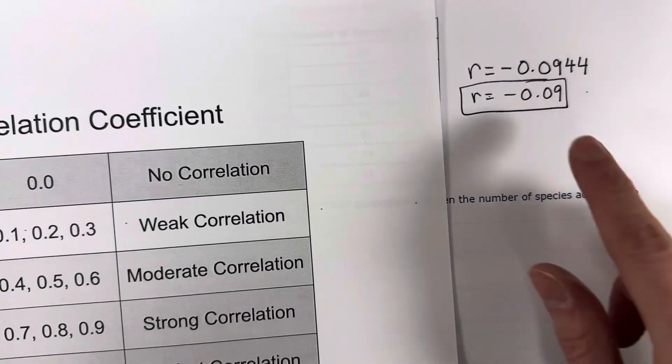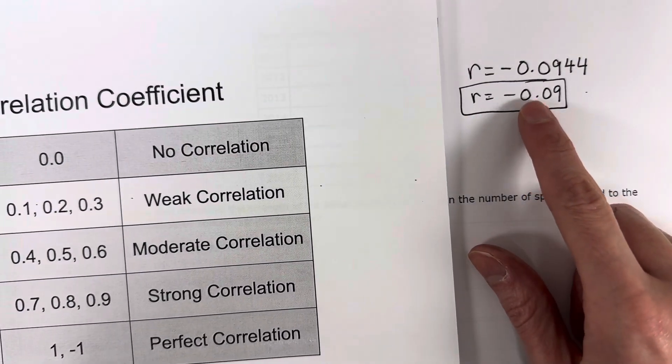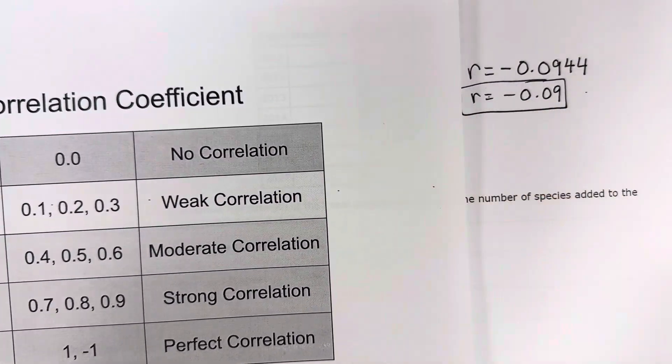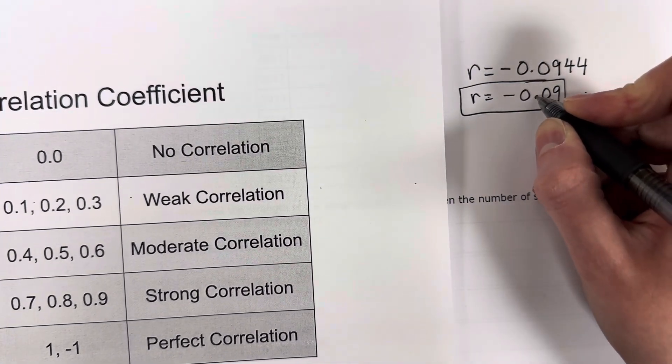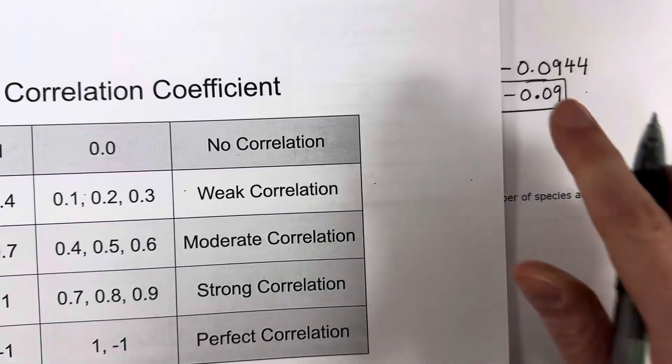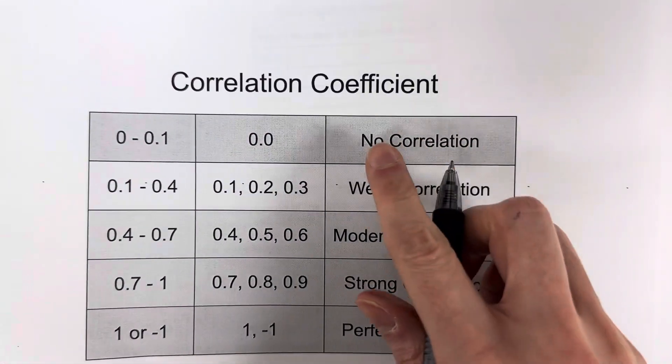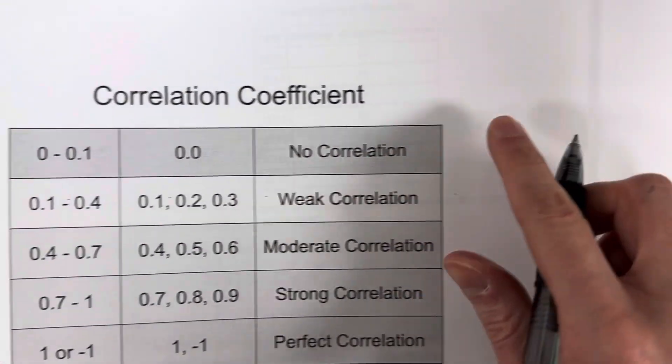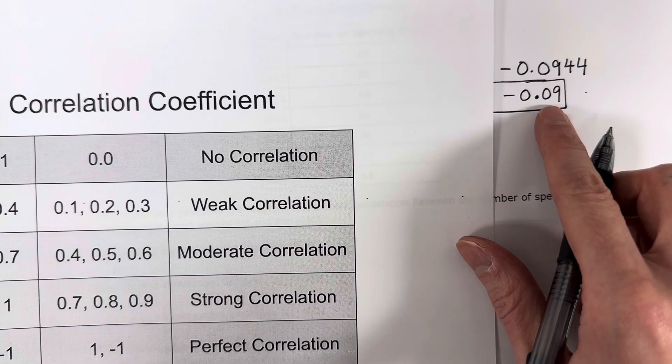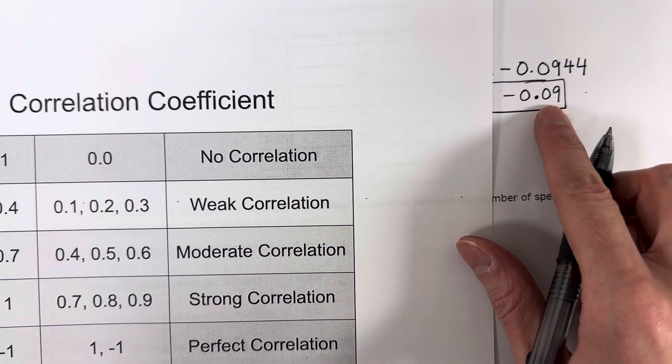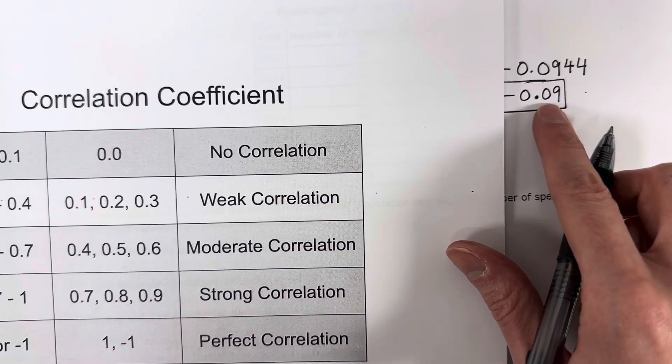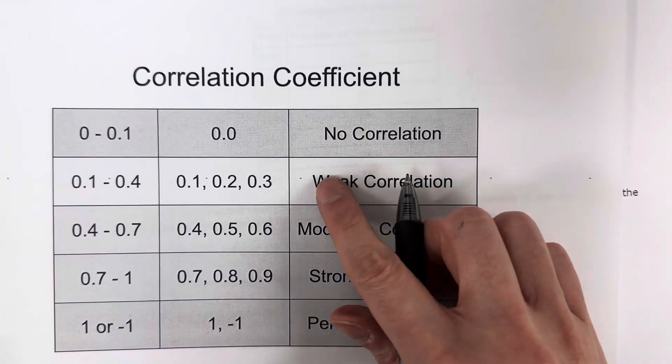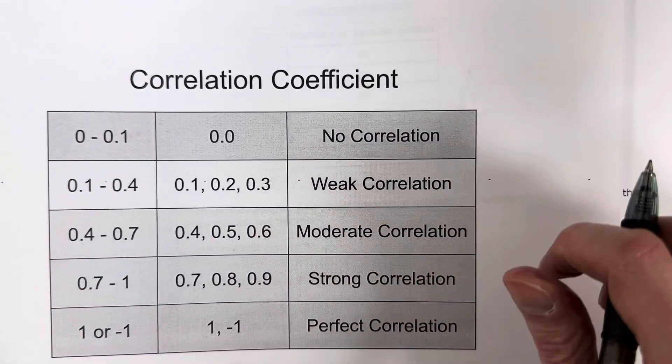Let's take a look at mine. Mine is 0.0. Do you see that you're going to look at the number right after that decimal point? So it's a 0.0. Which one is a 0.0? That would be a no correlation, but it's a 0.09, which is very close to a 0.1, right? A 0.09 is very close to 0.1. So I'm going to say that's a weak correlation.